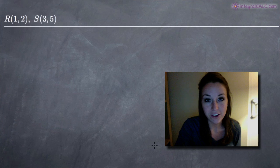Today we're going to be talking about how to find a vector when we're given two points. In this particular example, we've been given two points: the point R at (1,2) and the point S at (3,5).